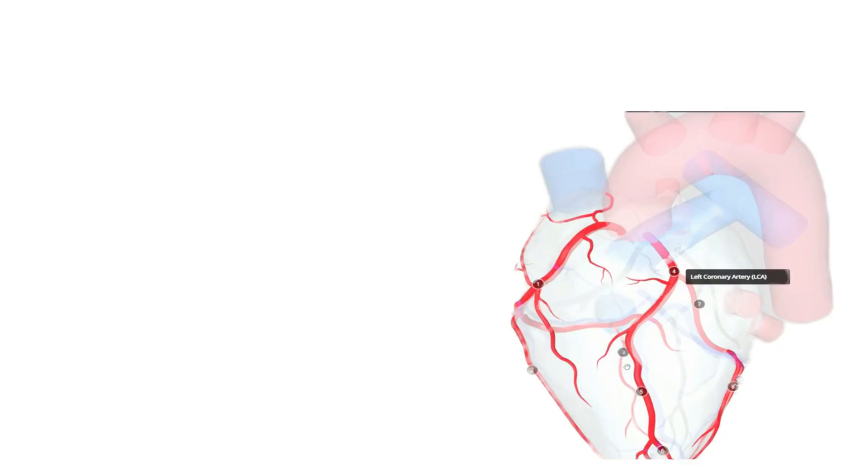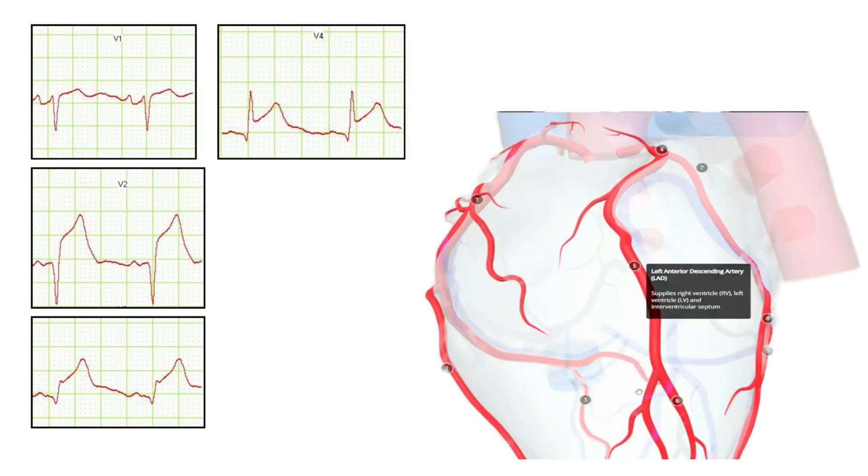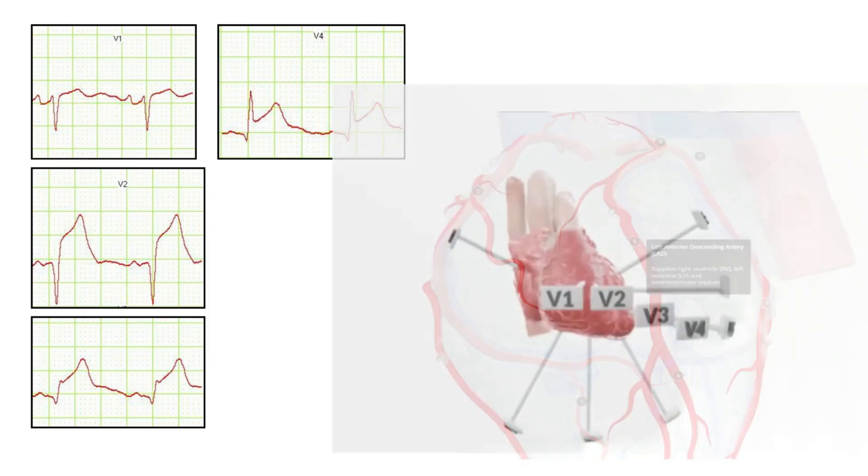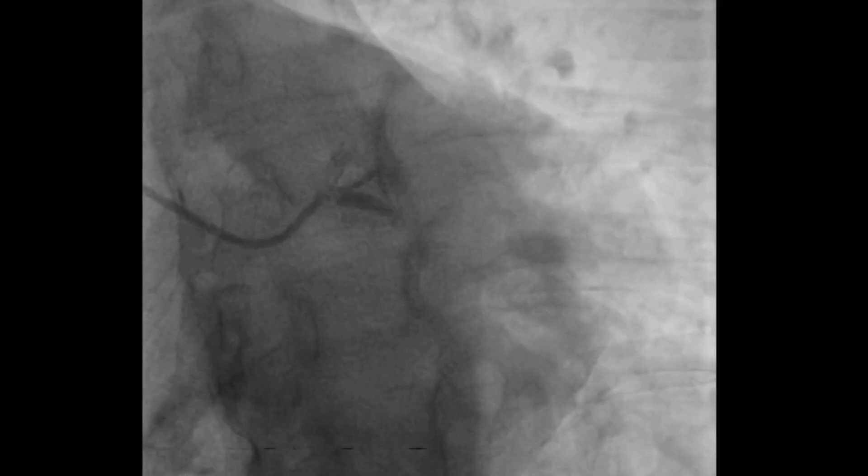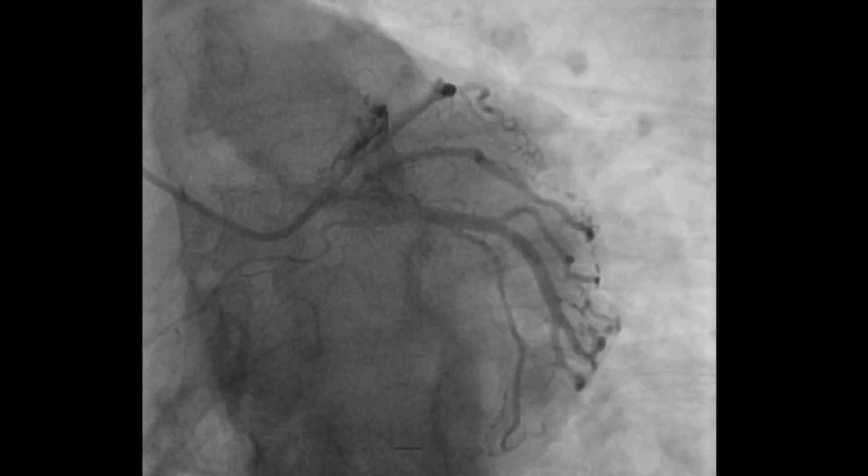Next the LAD or the widow maker. A blockage here leads to ST segment elevation in V1 to V4. These are the precordial leads which indicate the anterior wall infarction. On the angiography the LAD blockage appears along the front descending branch.